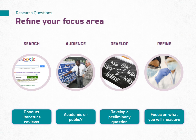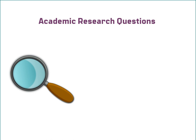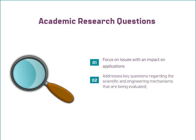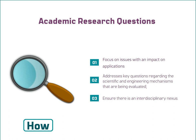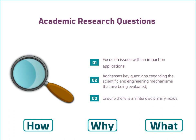Research that is designed for academia, such as dissertations or peer-reviewed journal articles, or a regulated industry, such as drug development or construction, has different criteria and expectations than research designed for the public, like documentaries. This means that how you select your research questions can be impacted by your audience. Since Sarah is pursuing her PhD, she should be considering research questions that focus on issues with an impact on applications, address key questions regarding the scientific and engineering mechanisms being evaluated, and ensure there is an interdisciplinary nexus. In short, the research question should explore how variables are impacted by the experiments proposed, why those variables changed, and what were the underlying factors that caused the change.